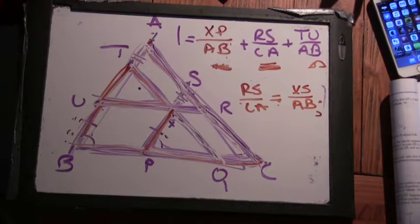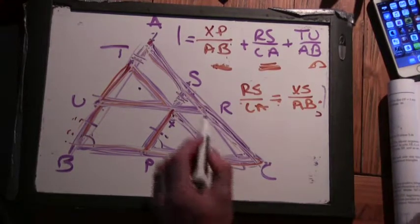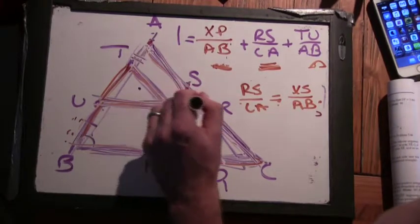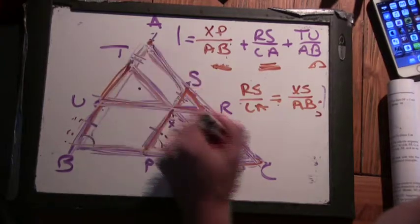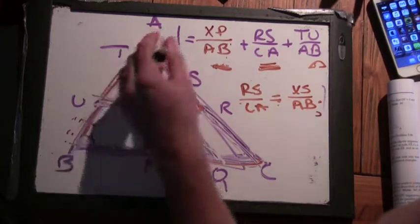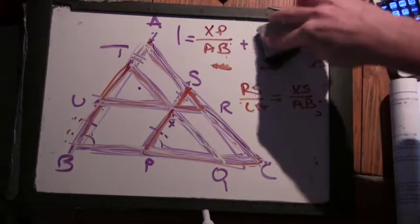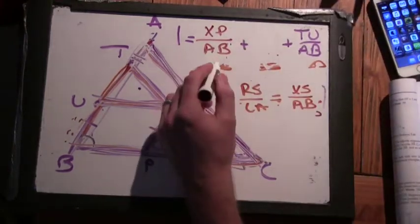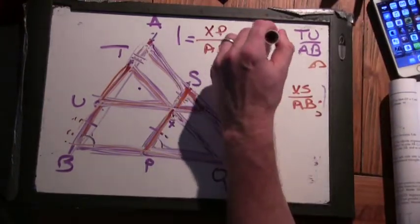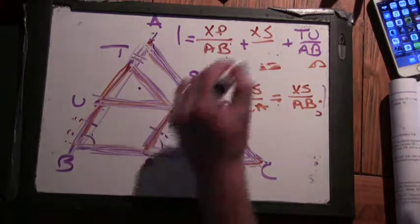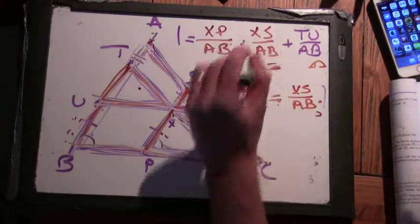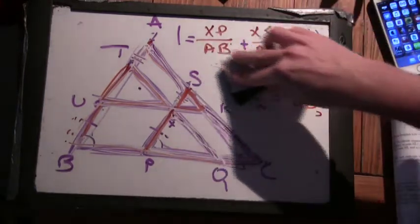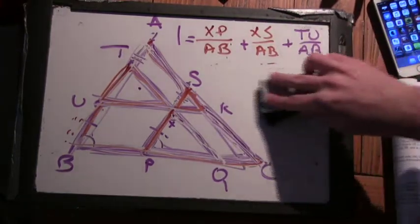Okay. So, now we have an interesting thing. So, we just noticed that in this triangle here, RS to AC is the same as SX to AB. Yeah. So, now we have this up here. We have XP over AB plus XS over AB plus TU over AB. That's what we're trying to show is equal to one now. So, what's interesting about that?